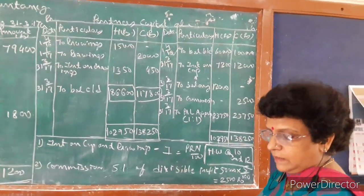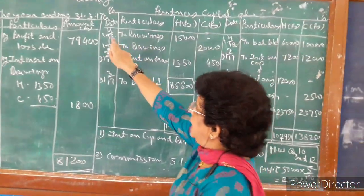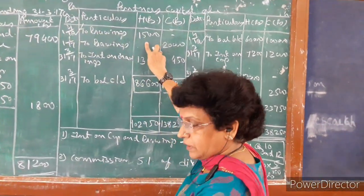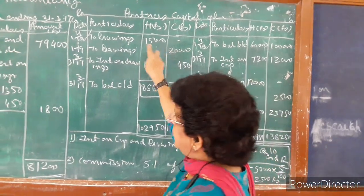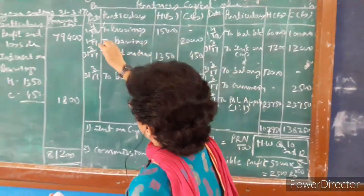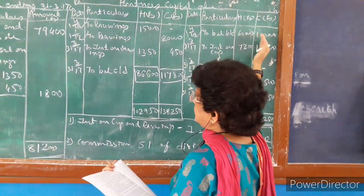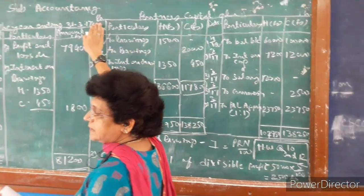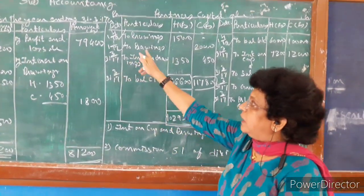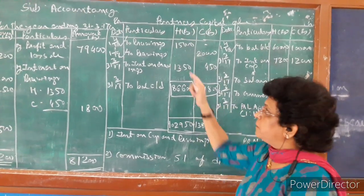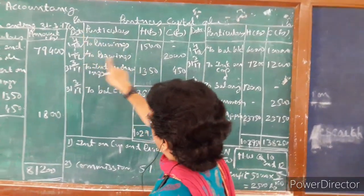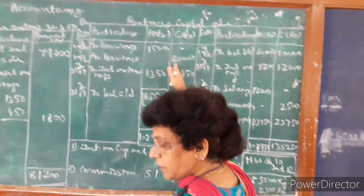Then, the second line. During the year, Harpan has withdrawn 15,000 and Jirag has withdrawn 20,000. Capital has a credit balance, drawings have a debit balance. We have learned the transfer of the drawing account entry — capital account debit, drawing account credit. So here, the drawings are to be transferred to the debit side of the capital account in the respective column.